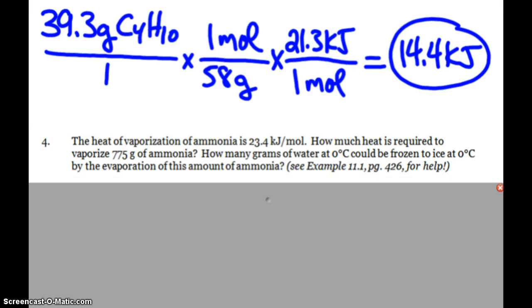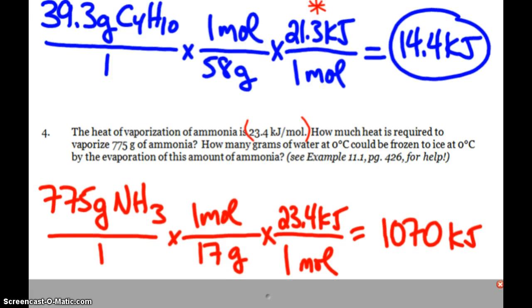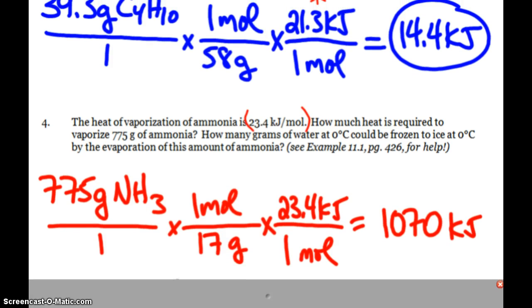A very similar question. This time it's ammonia. Ammonia has a heat of vaporization, 23.4 kilojoules per mole. That means it has stronger intermolecular forces than the butane because of its higher heat of vaporization. How much heat is required to vaporize 775 grams of ammonia? Same problem, just different numbers. Molar mass of ammonia, use the heat of vaporization. This time with a much larger sample, we see a much larger amount of heat, 1,070 kilojoules.